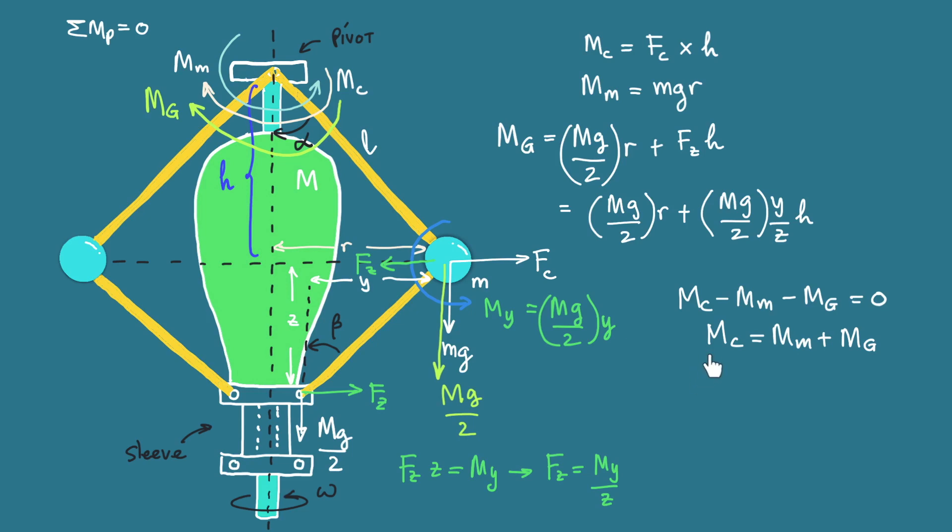Now MC is FC multiplied by H where FC is the centrifugal force given by the mass of the ball multiplied by omega squared and multiplied by the radius of rotation. So MC is M omega squared R multiplied by H equals MM plus MG.